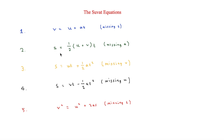The next equation is S equals half times (U plus V) times T, so displacement equals half of initial plus final velocity, multiplied by time. After that, S equals UT plus half AT squared, meaning displacement equals initial velocity times time plus half times acceleration times time squared.